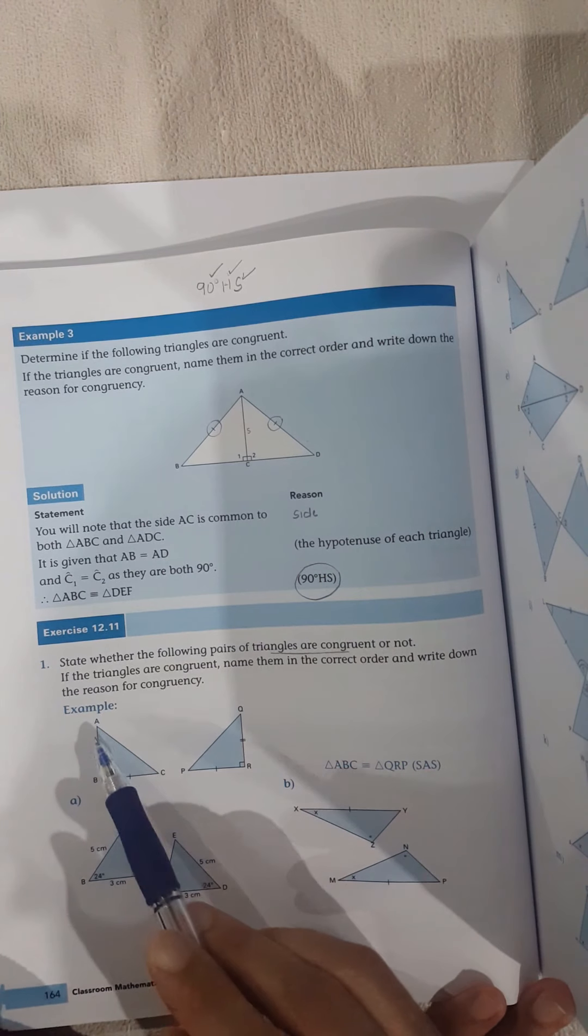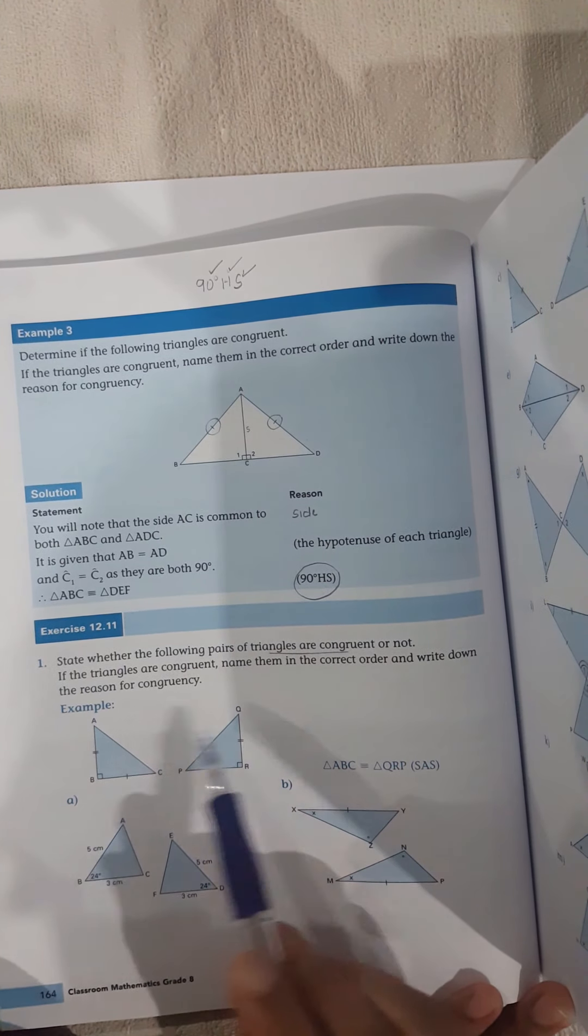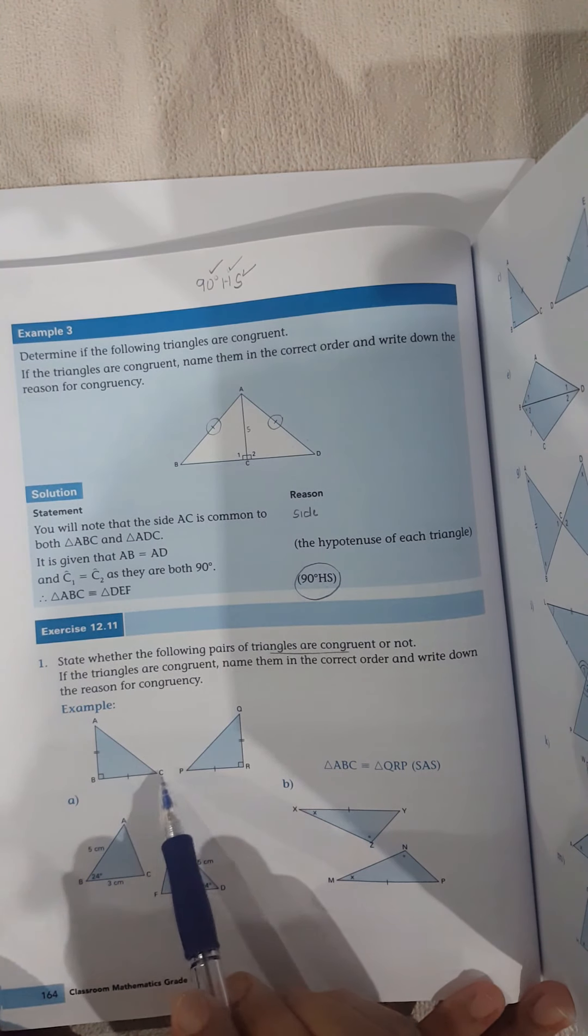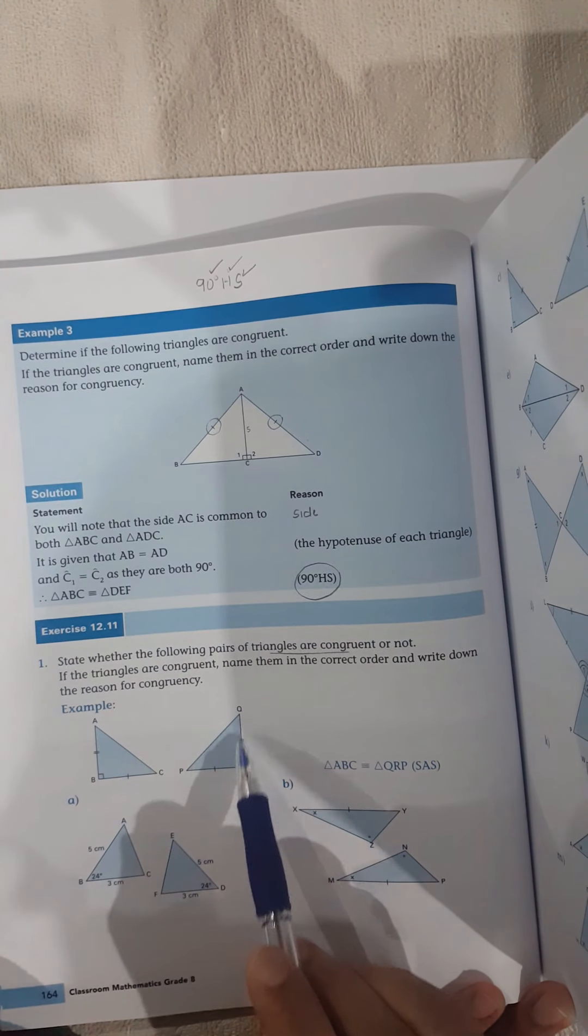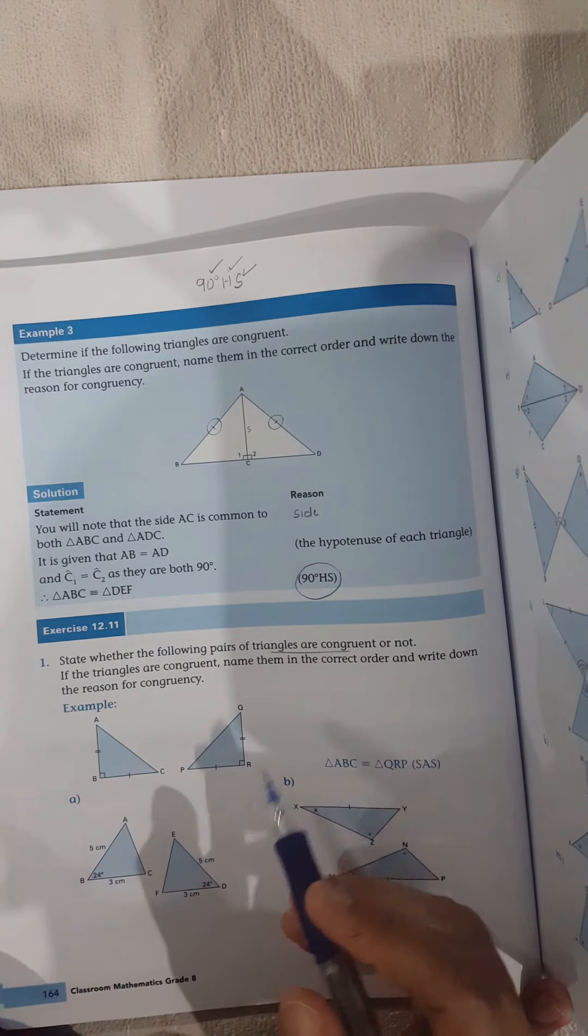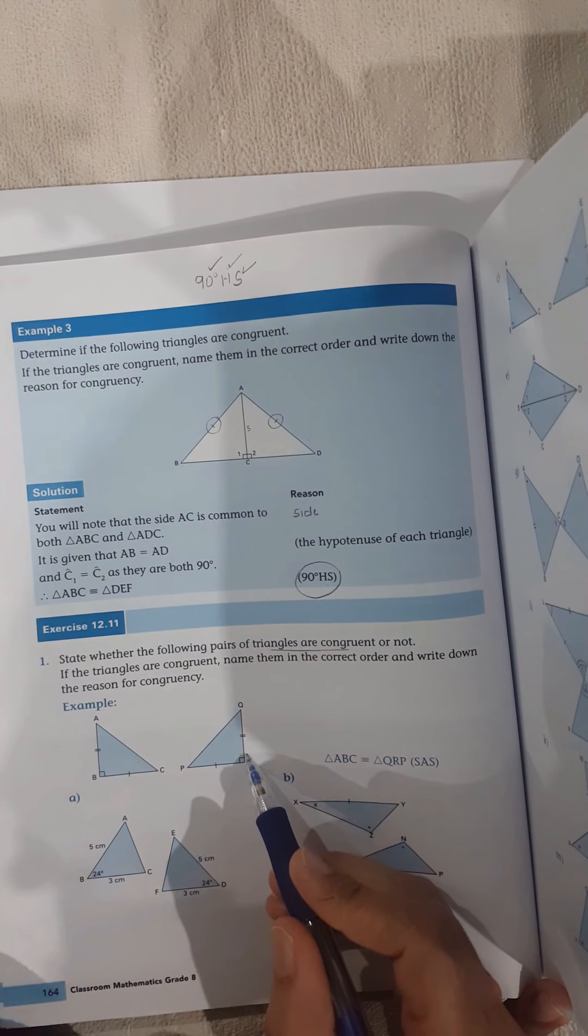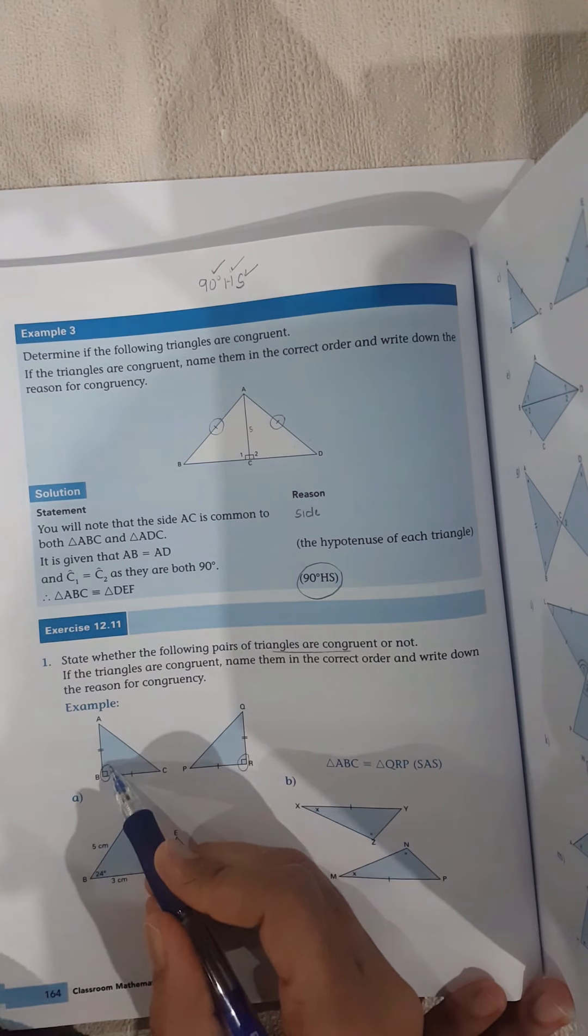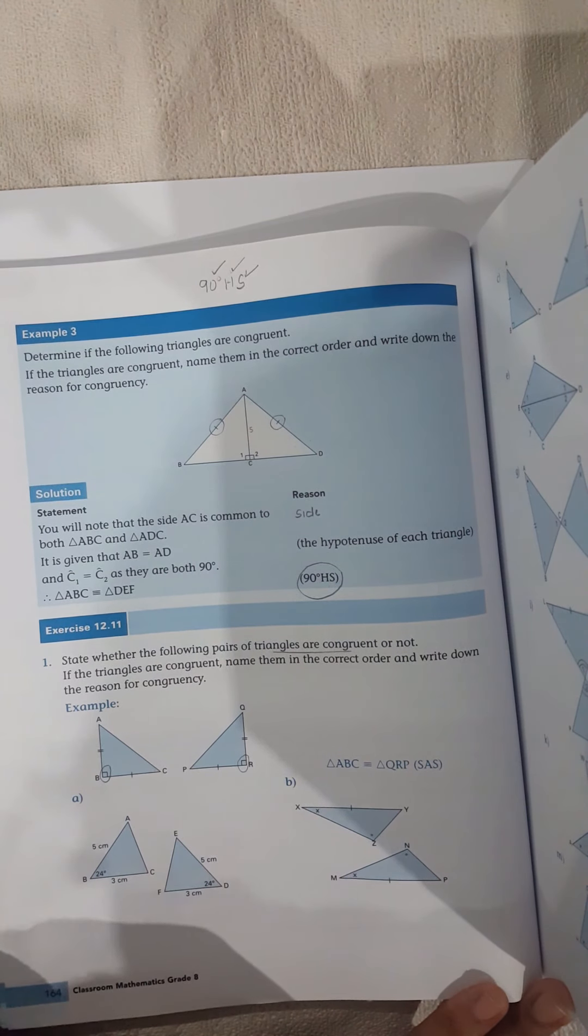So here's the example here. We're looking at this example together. We've got a triangle ABC and QRP. So let's see what we've got equal. We've got two angles. Here's 90 degrees. Here's 90 degrees. I've got 90 degrees and 90 degrees.